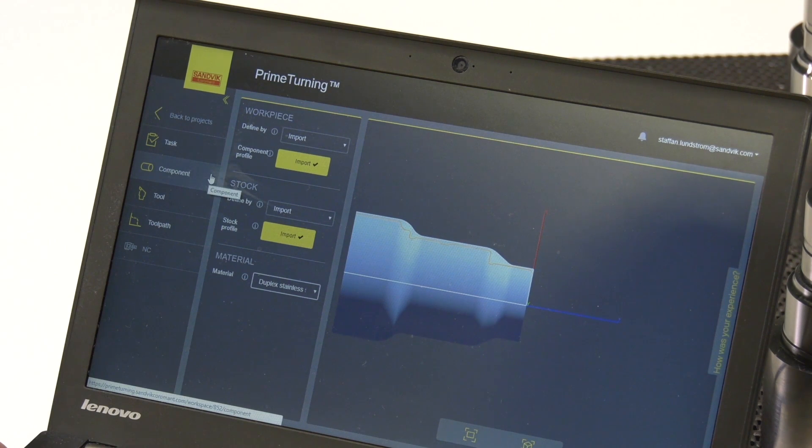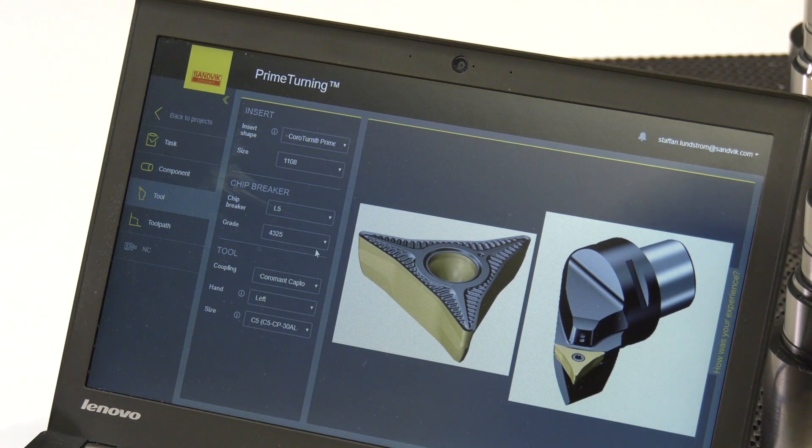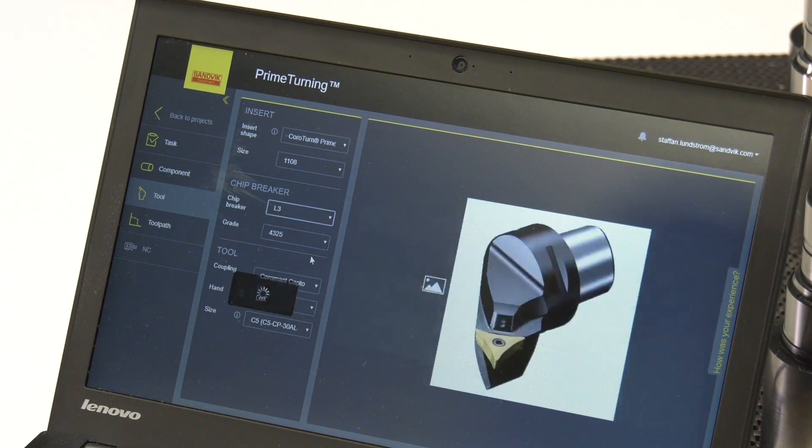And when you fill in those two input steps, the rest should come from the system. So it generates a recommendation of grade and geometry. Today we will run a new L3 geometry. That is brand new for prime turning, prime A.